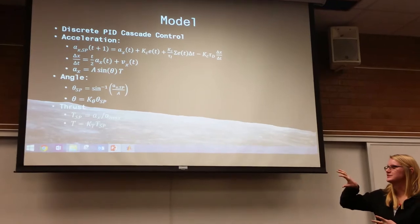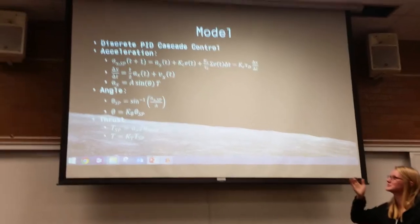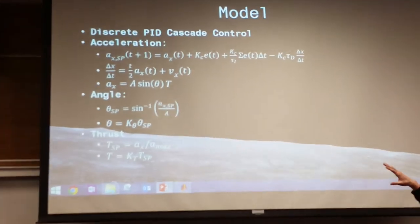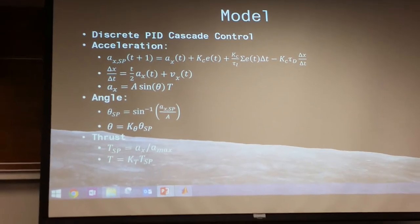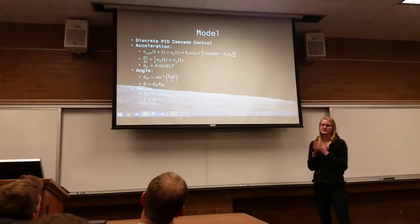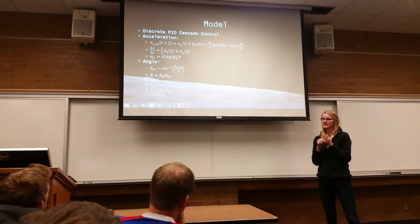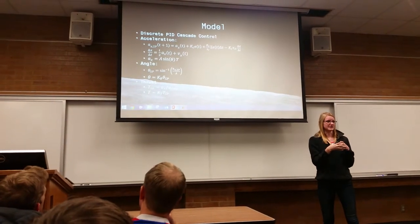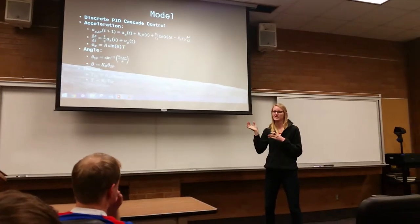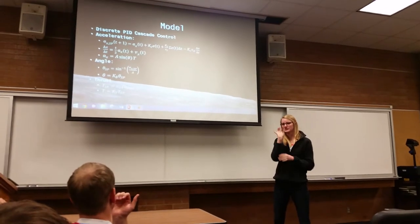The equations we used, it was basically just physics for the most part. The A is the acceleration, and the SP stands for setpoint. Our error function was just the setpoint of the lander pad that we wanted to get to, and then subtracted from the actual position of the lunar lander.